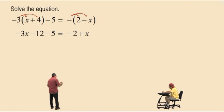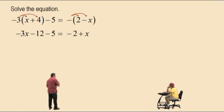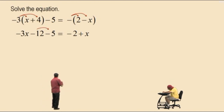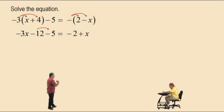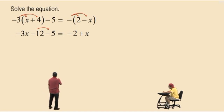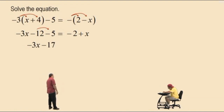Now next we're going to combine like terms on the left-hand side. We have like terms. What are the like terms on the left-hand side, Charlie? Negative 12 and negative 5. That's right. A negative 12 and a negative 5. So we'll add negative 12 plus a negative 5. But first, let's bring down our negative 3x. Charlie, what's negative 12 plus a negative 5? Negative 17. That's right.